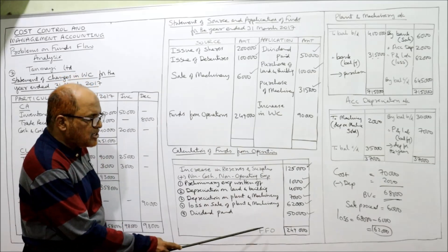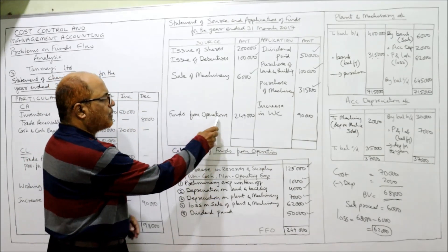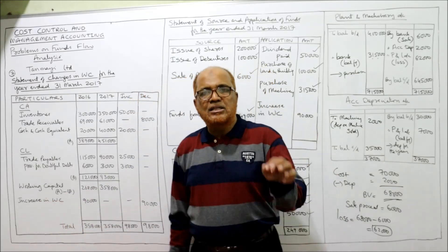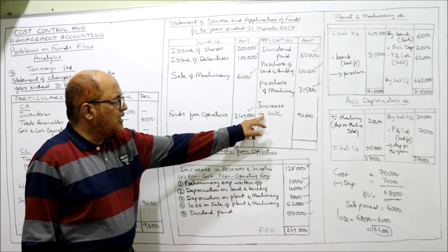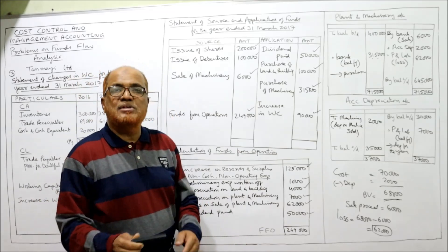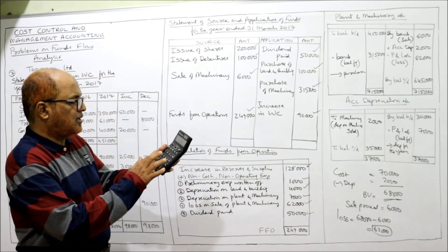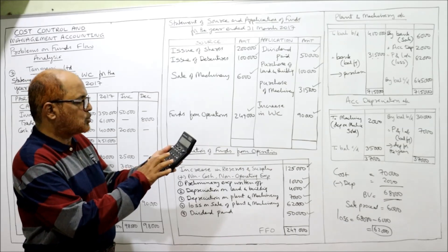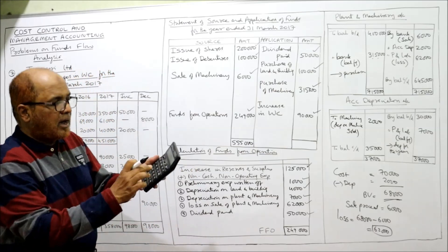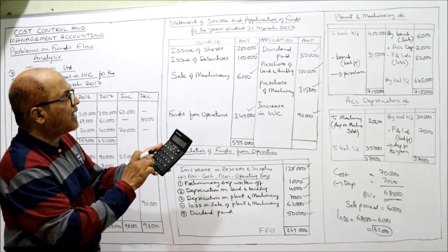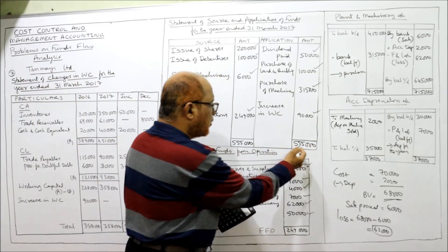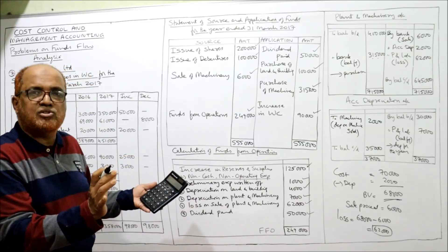Taking the total of all these items, we get two lakh forty-nine thousand — that is funds from operation (FFO). Increase in working capital ninety thousand is taken on the application side. Now to verify: source side — two lakh plus one lakh plus six thousand plus two lakh forty-nine thousand equals five lakh fifty-five thousand. Application side — fifty thousand plus one lakh plus three lakh fifteen thousand plus ninety thousand equals five lakh fifty-five thousand. Both sides are equal, so the solution is correct. That is the end of problem number seven.